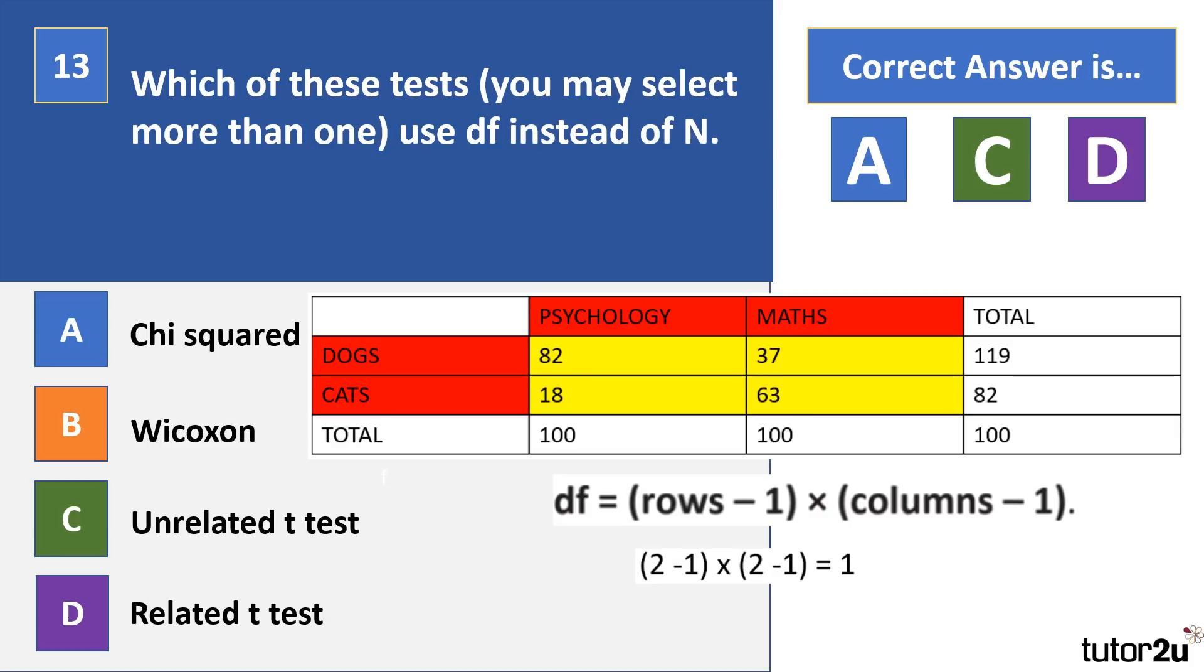Where this gets a little confusing is sometimes students want to include the total column and row when they're coming to df, so when you're calculating df you leave those totals out. So you see how I've highlighted it here. I've highlighted the two rows of our actual data and the two columns of our actual data, so df calculation is two rows minus one, multiplied by two columns minus one, which is one. Now this contingency table for chi-squared has come up before, so please have a little bit of a look around it. It says about only calculating the sign test, but chi-squared contingency perhaps is a possible question, as also may be calculation for df or at least recognizing what df is.